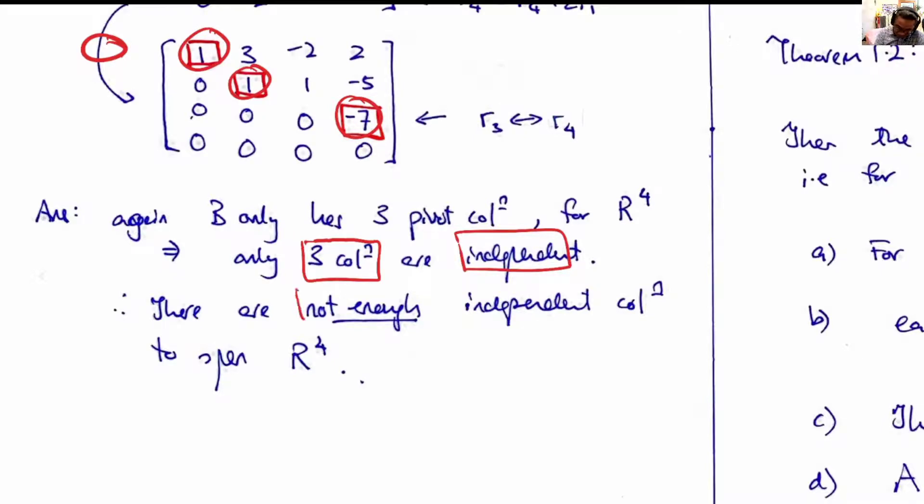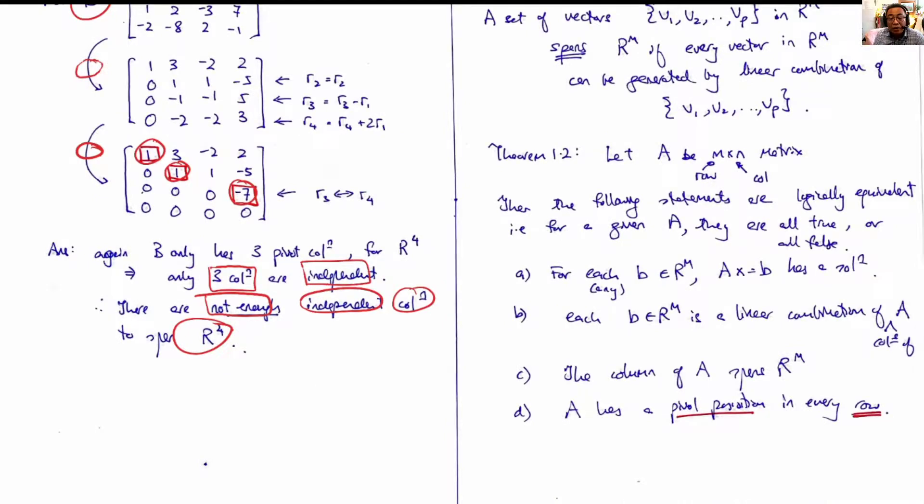As such, we can conclude that there are not enough independent columns of B to span R^4. To span R^4, we need four independent columns, and each column is in R^4.